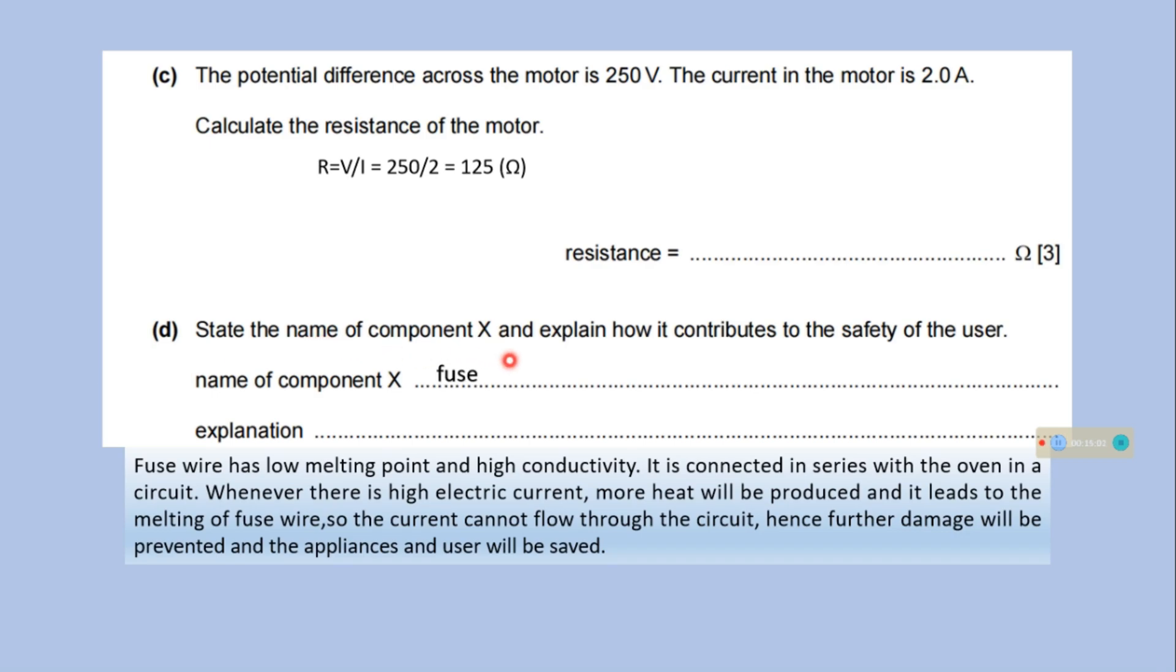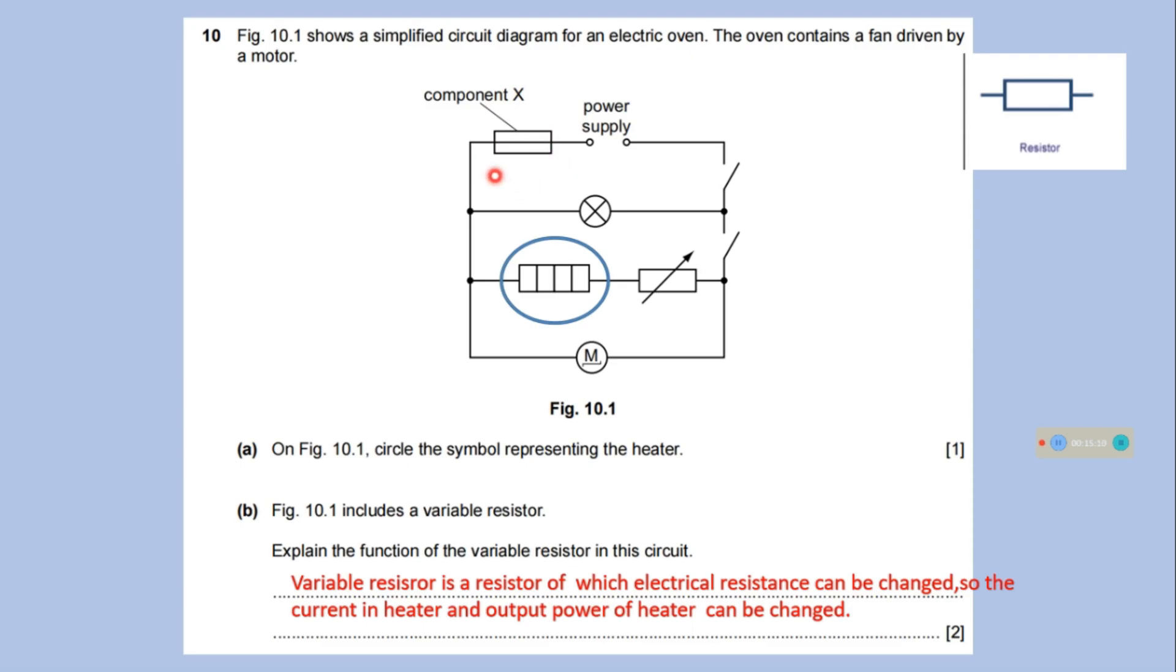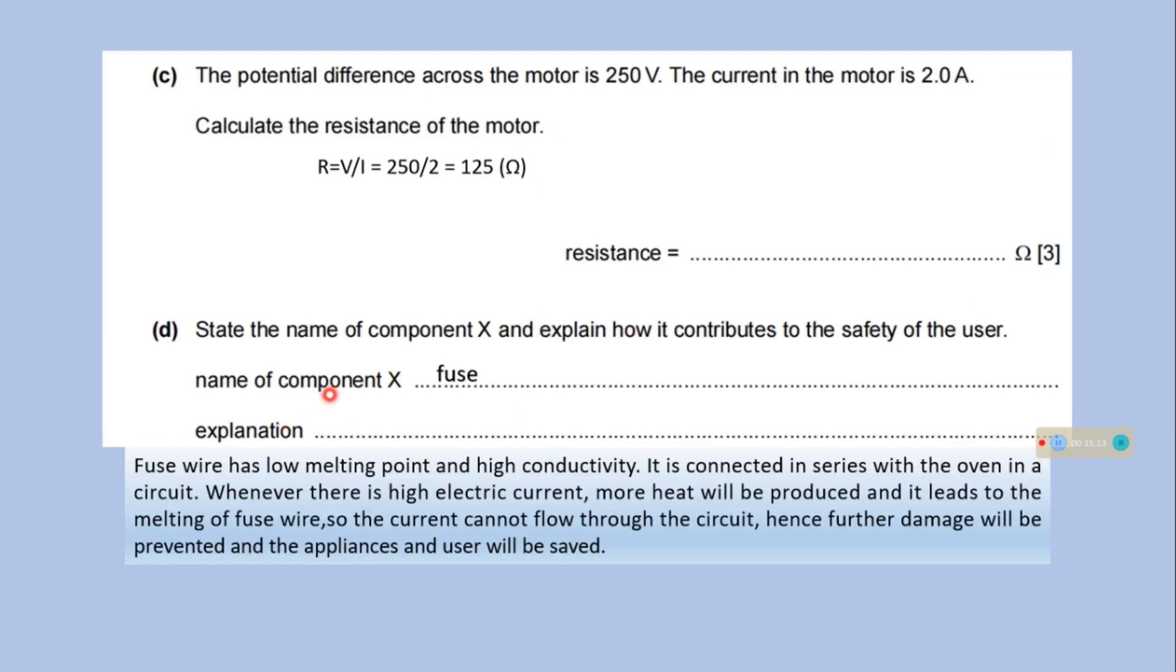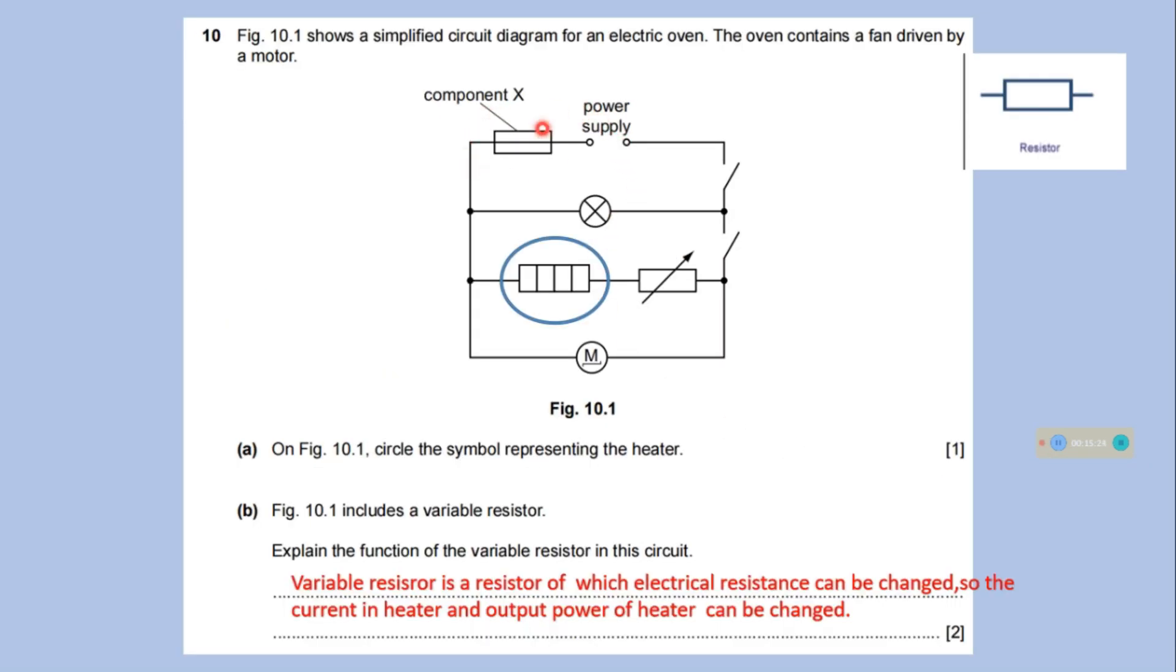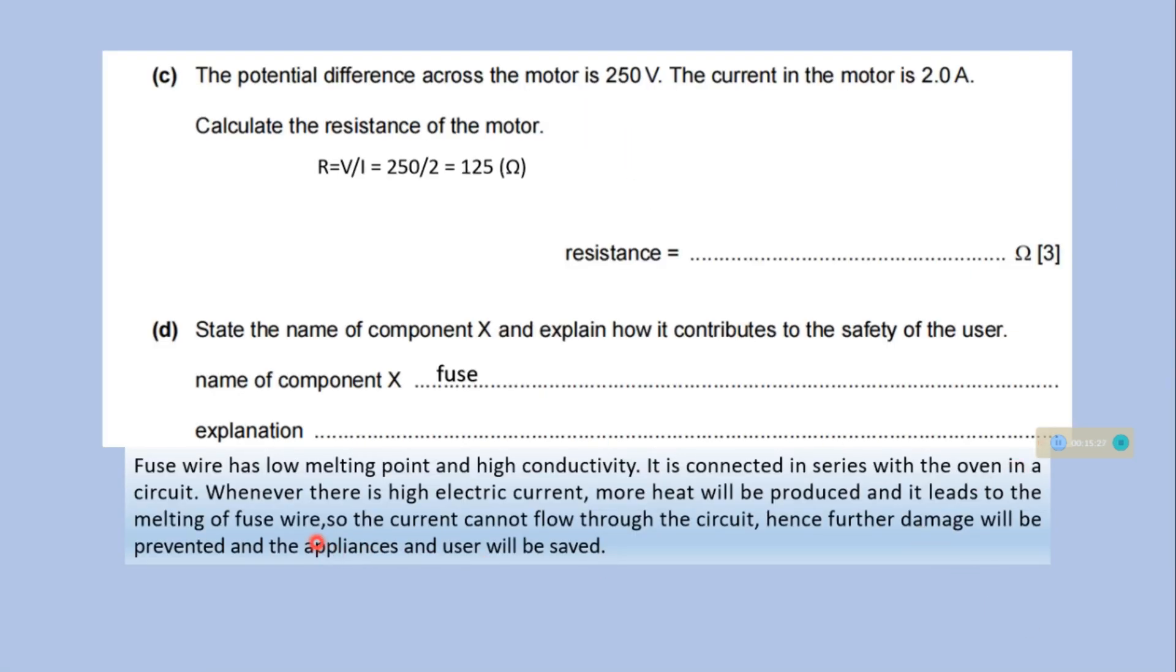State the name of component X and explain how it contributes to the safety of the user. Name of component: X is a fuse. This is a symbol for fuse. How it contributes to the safety of the user: Fuse wire has low melting point and high conductivity. It is connected in series with the circuit here. Whenever there is a high electric current, more heat will be produced and it leads to the melting of fuse wire. The current cannot flow through the circuit. Hence, further damage will be prevented and the appliances and user will be saved.